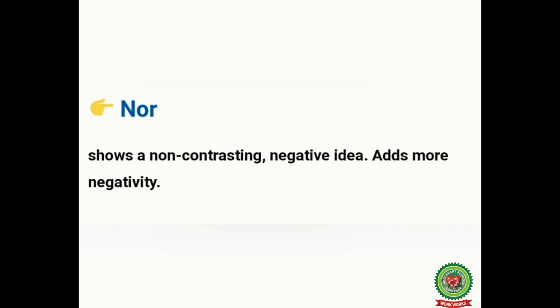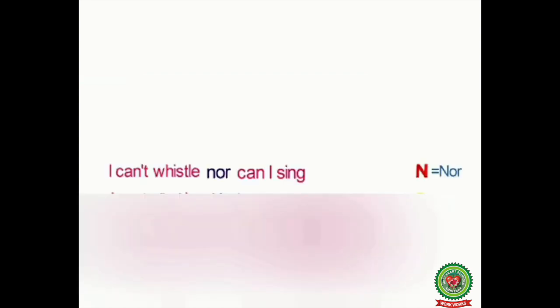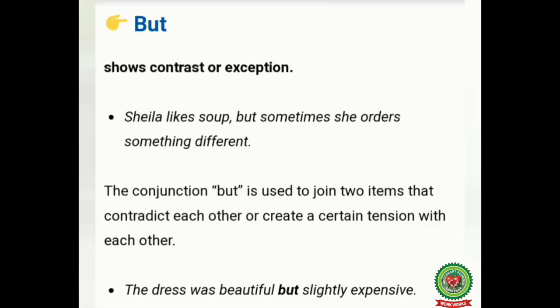The next coordinating conjunction is 'nor.' 'Nor' is used to show a negative idea, or it adds more negativity to the sentence. For example: 'I can't whistle, nor can I sing.' In this sentence the conjunction 'nor' is showing more negativity.